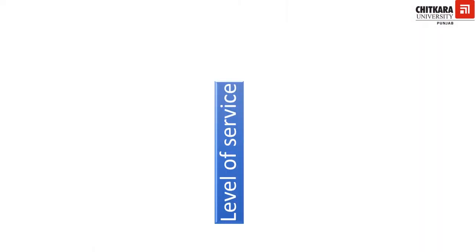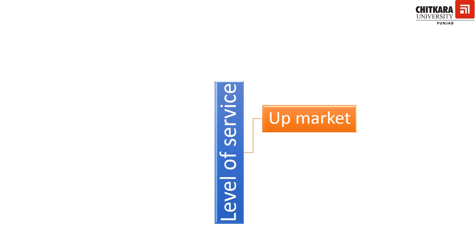Based on the level of service, the hotels can be classified into upmarket hotels. These hotels target the affluent class of the society. Hence, they focus on excellence and class and provide world-class products and services that are highly personalized. Upscale restaurants and lounges, exquisite decor, concierge services, and huge rooms with excellent ambience are the distinguishing characteristics of this type of hotel.